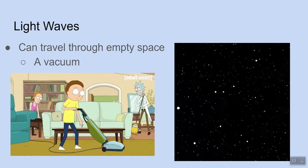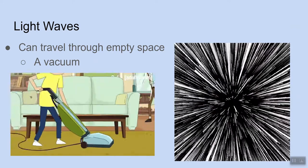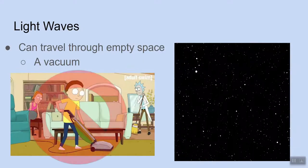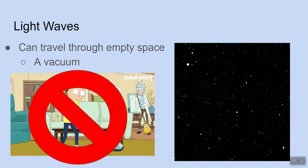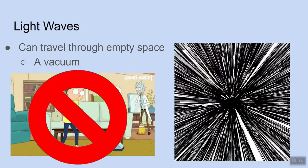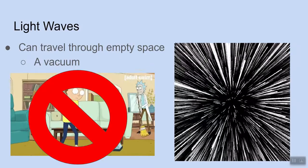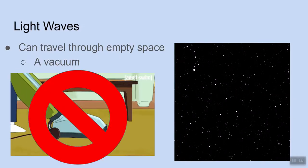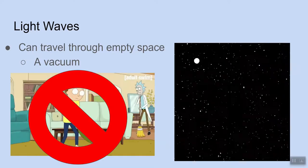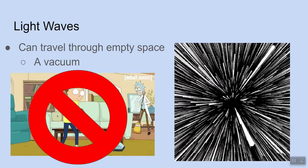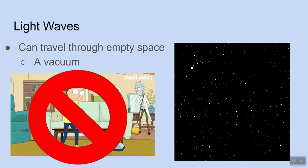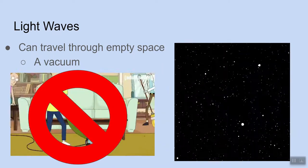Now, light waves can travel through empty space, and another word for empty space is a vacuum. So not this vacuum, like you would use to suck up dirt off the floor, but we're just going to use the word vacuum as another word for empty space. A lot of space itself, outer space, is considered a vacuum because there is a lot of empty space in there, and light can travel through it without needing a media to travel through.